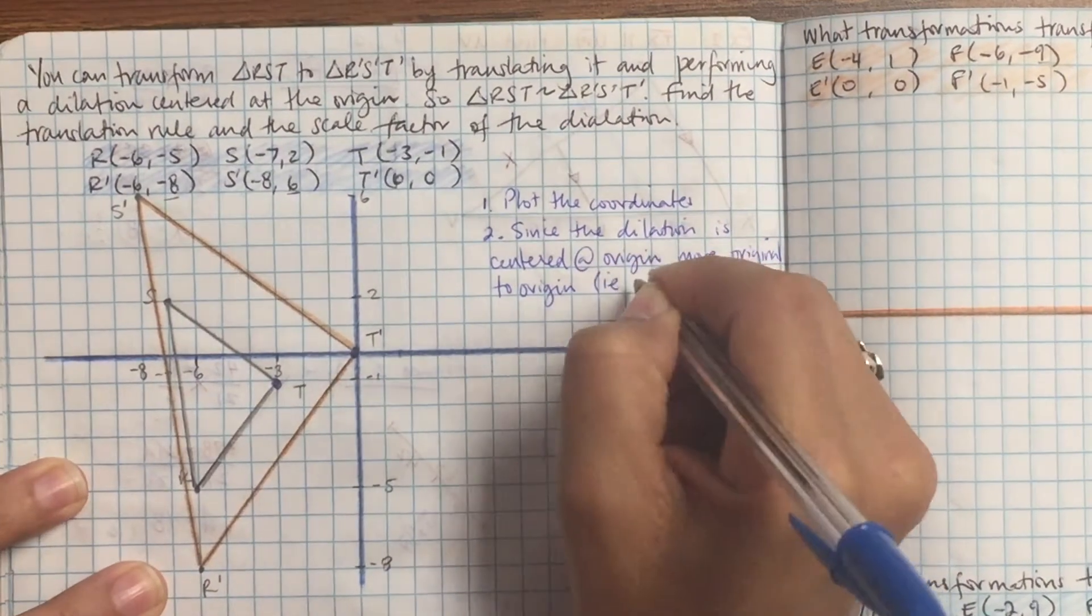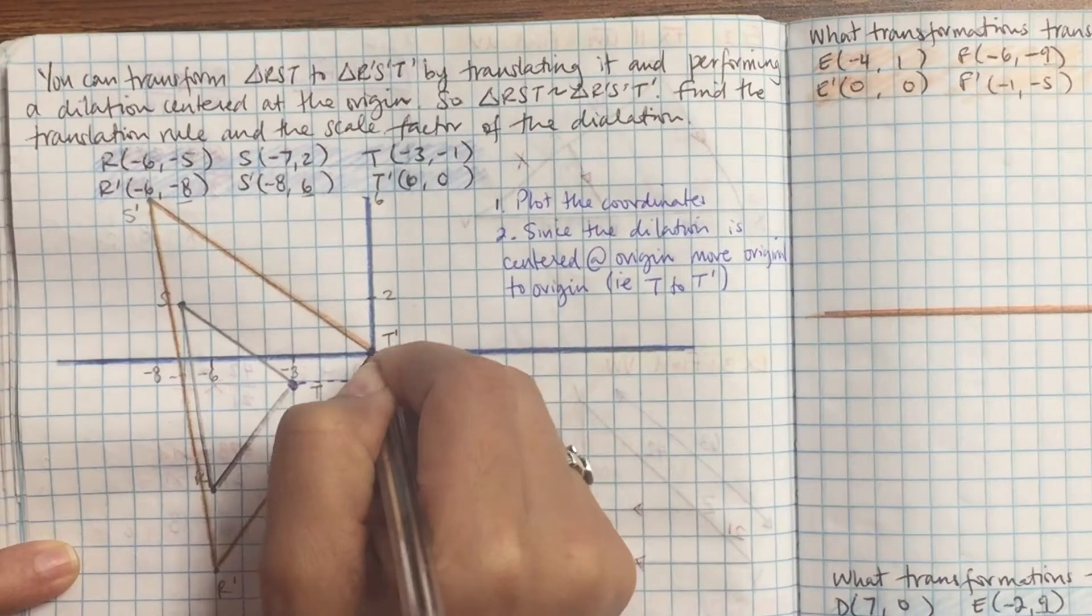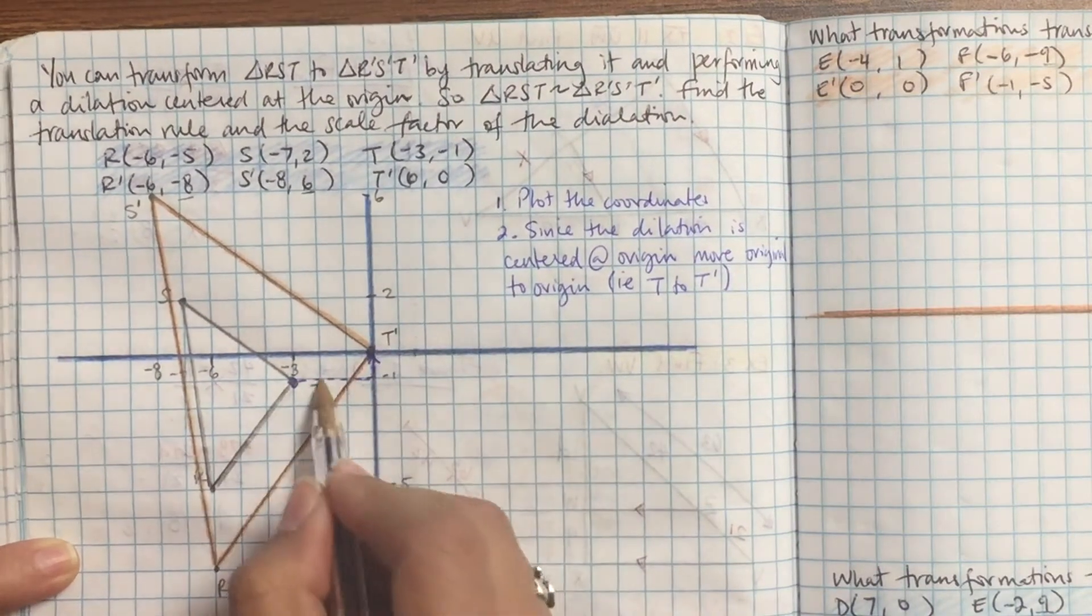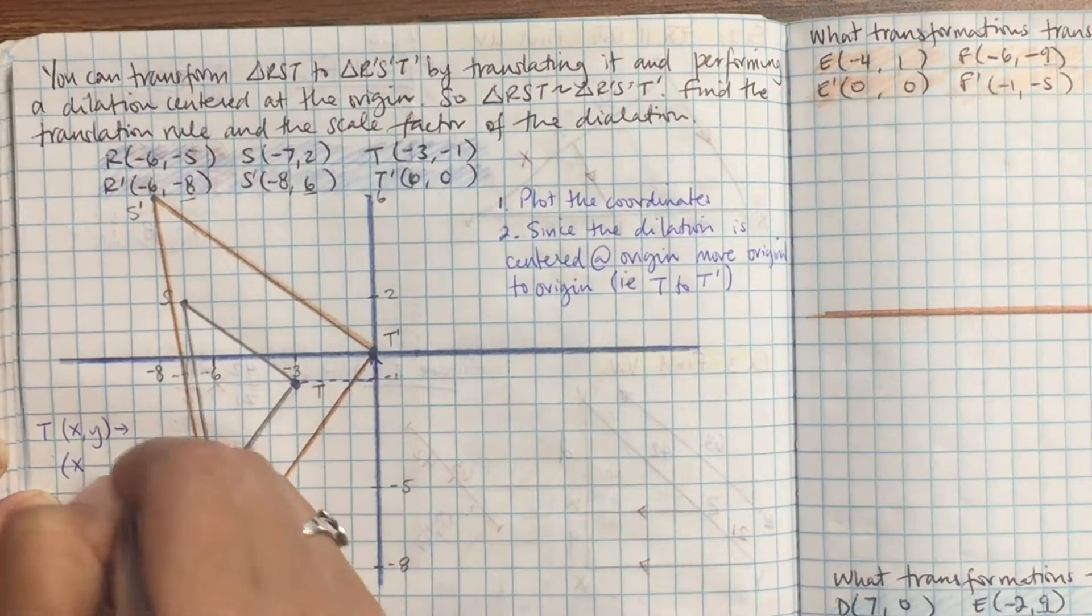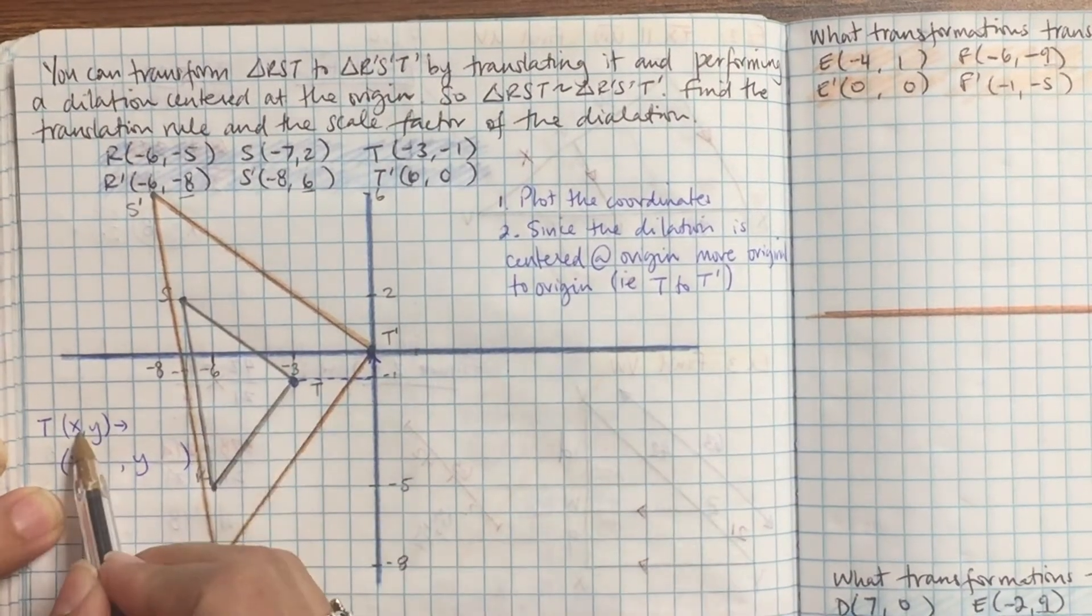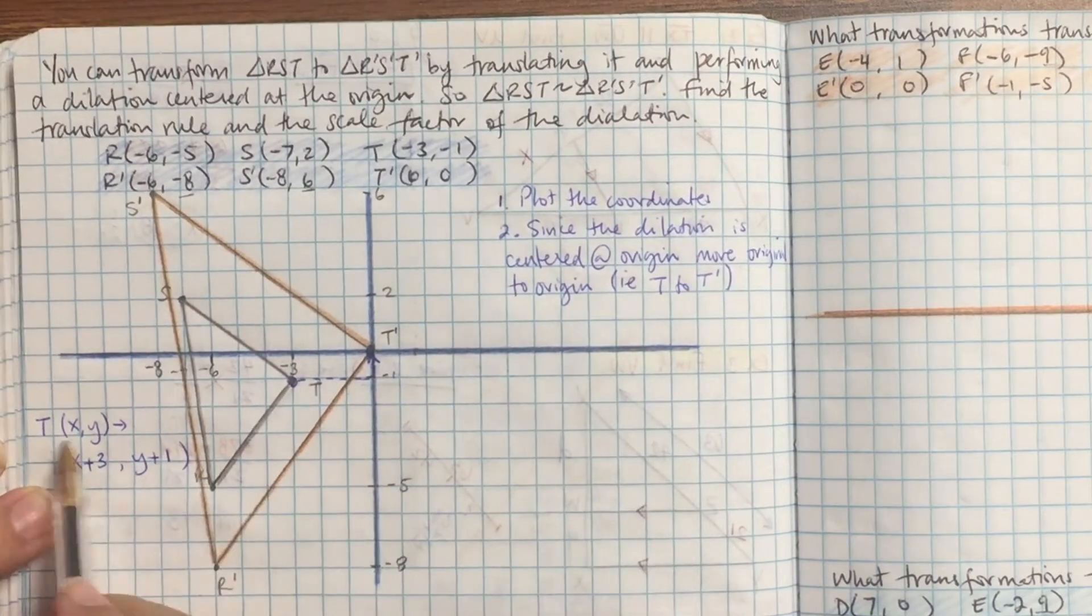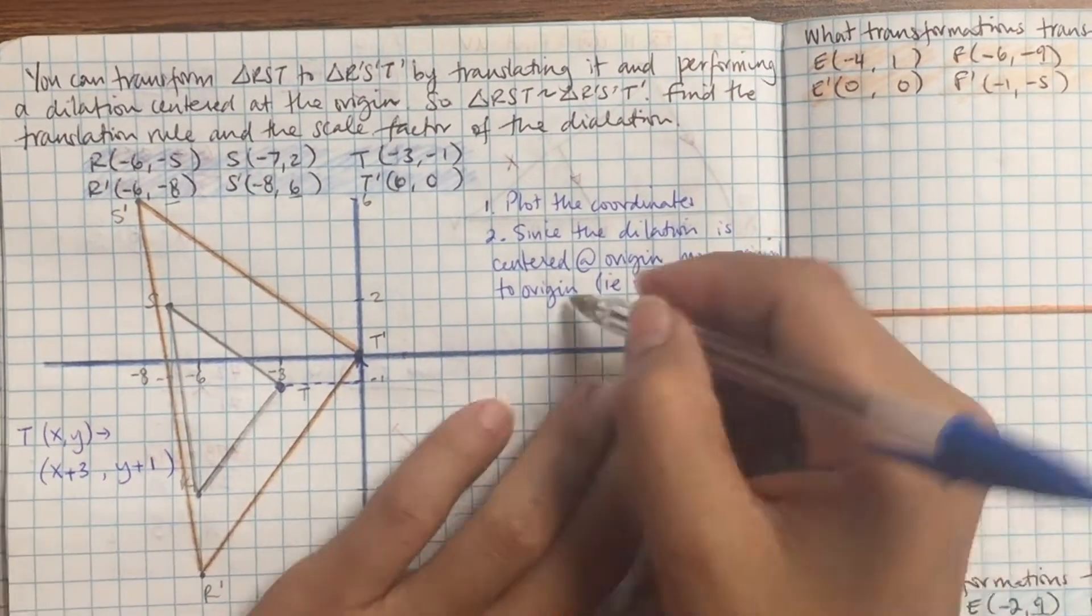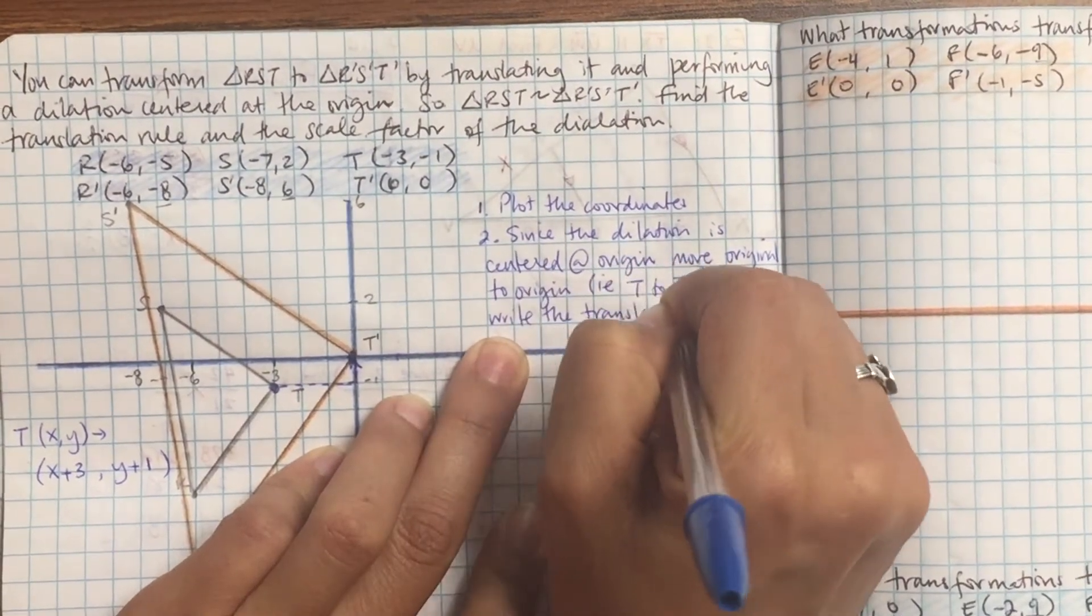How did I move from T to T prime? I'm going to move right and up. So right is positive, up is positive, they're both positive. And I'm moving right how many spaces? 3. And up how many? 1. So the translation rule is x plus 3 and y plus 1. That means right 3 up 1. And write down the translation rule.